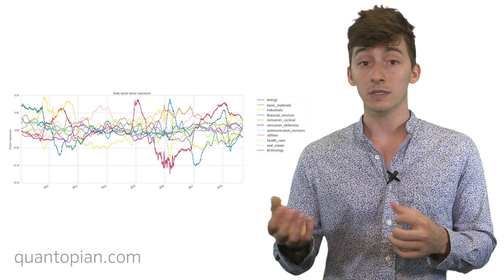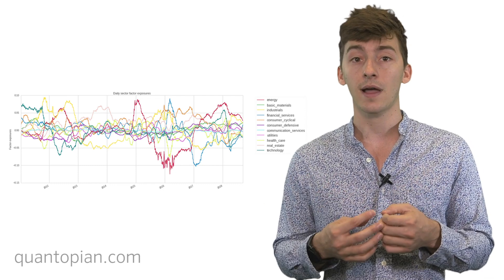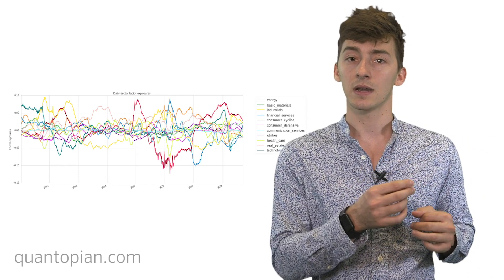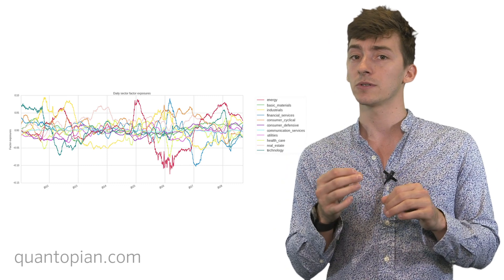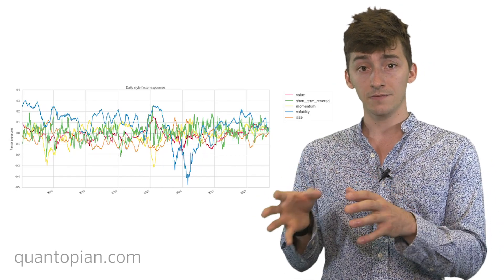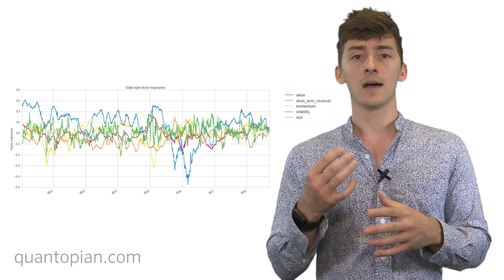So in the case of the Quantopian Risk Model, what we have are 16 risk factors, 11 sectors, because this allows us to get a more nuanced view versus exposures to the overall market, and five styles. This is momentum, volatility, and some other ones.